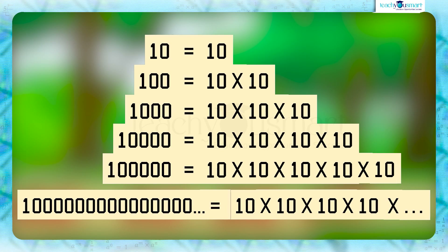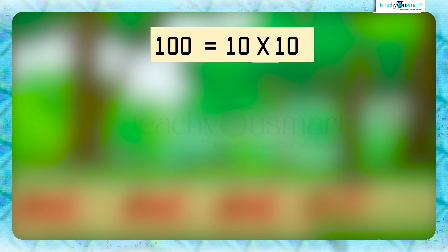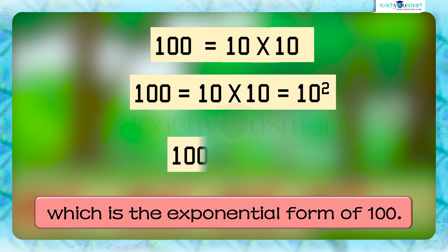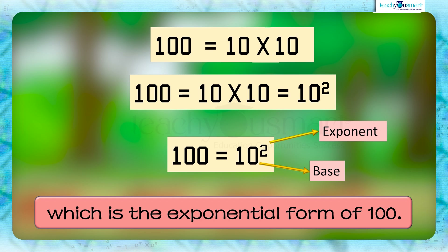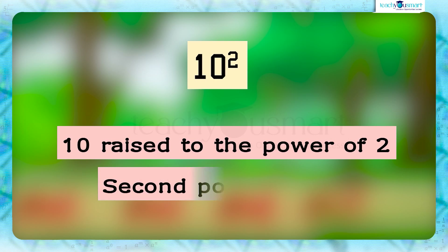So we can write all these numbers in exponential form. We have 100 equals 10 multiplied by 10, which consists of two 10s. So we represent it as 100 equals 10 multiplied by 10 equals 10 squared, which is the exponential form of 100. The number 10 is called the base and 2 is the exponent. The number 10 squared is read as 10 raised to the power of 2, or the second power of 10.